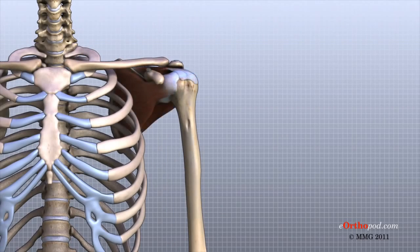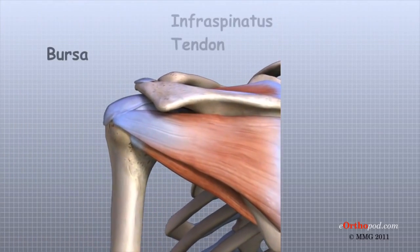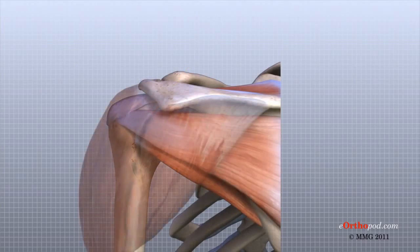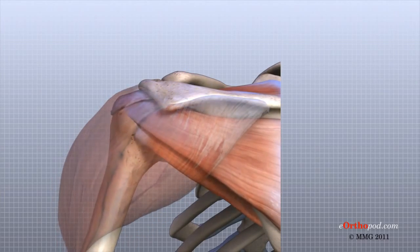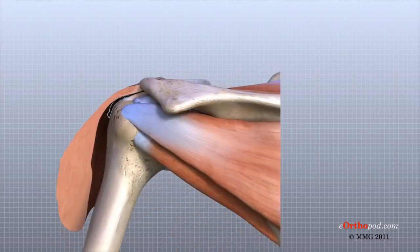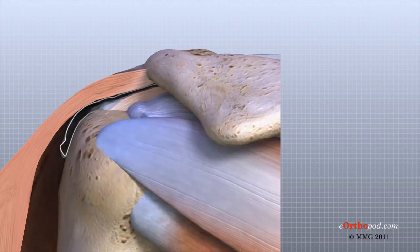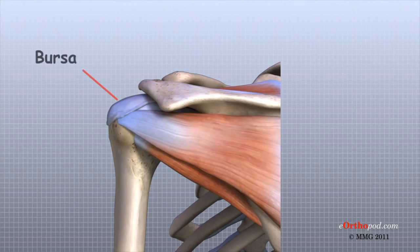Sandwiched between the rotator cuff tendons and the deltoid muscle are structures known as bursa. Bursa are found everywhere in the body, wherever two body parts move against one another and there is no joint to reduce the friction. A bursa is simply a watertight sac between two moving surfaces that contains a small amount of lubricating fluid.